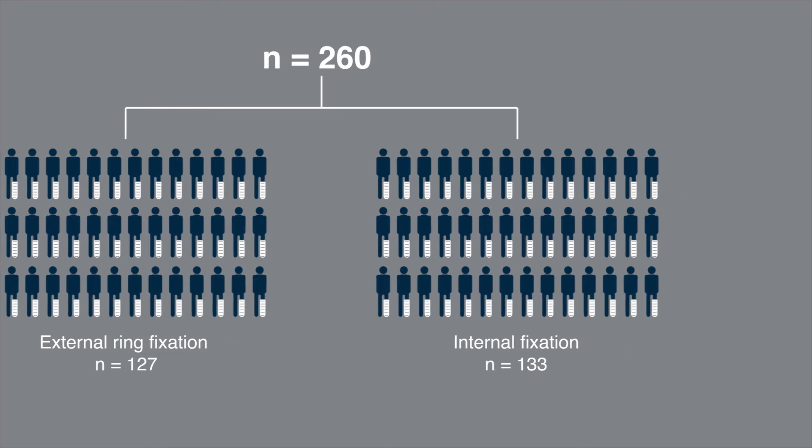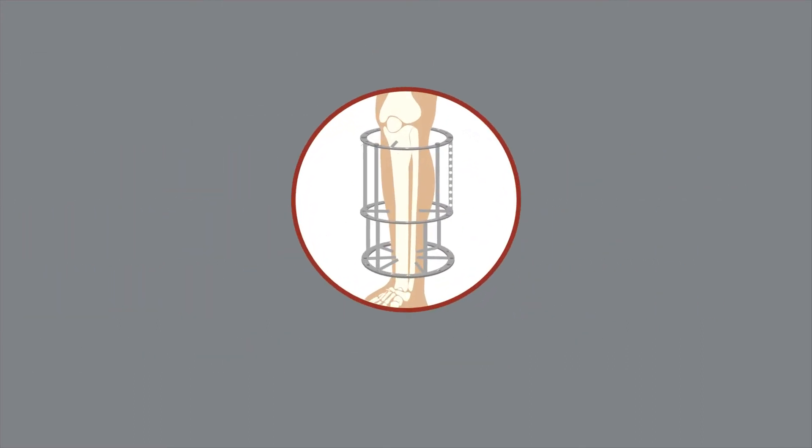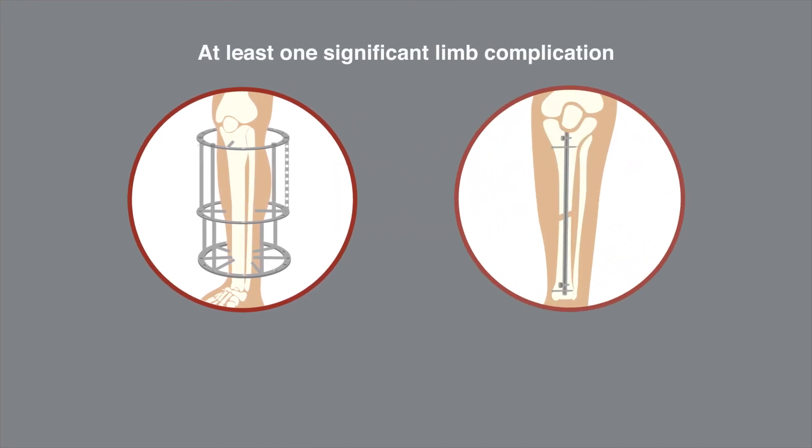Contrary to their expectations, the researchers discovered that external fixation had a higher risk of at least one significant limb complication than internal fixation, 62% versus 44% with a p-value of .001.